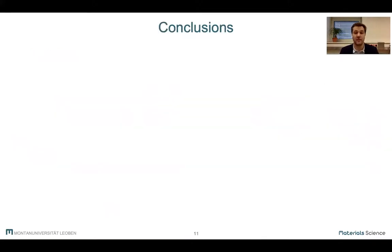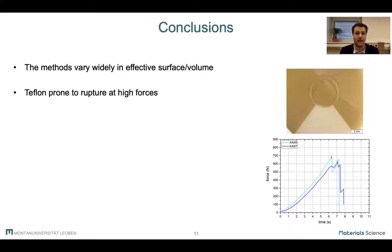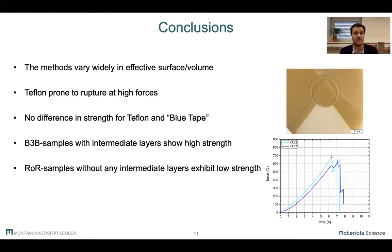Before we move on to the second part of this presentation, I want to sum up all conclusions so far. First of all, both methods vary quite a lot in tested effective surface and volume. Second, the Teflon tapes have a risk of rupture before specimen failure and should therefore not be used for high loads. Third, there is no difference in strength between the Teflon and the blue tape samples, so the blue tape is a good alternative. And as we have just seen, ball-on-three-balls samples with layers show an unusually high strength and ring-on-ring samples without any layers show quite a low strength.